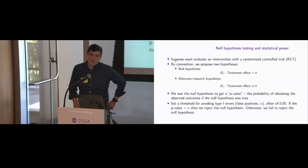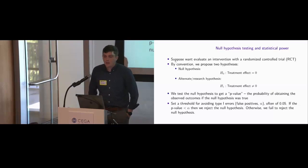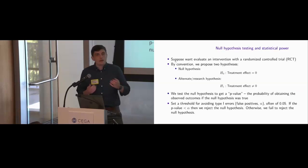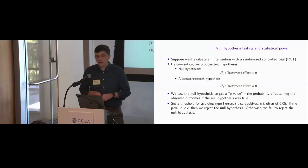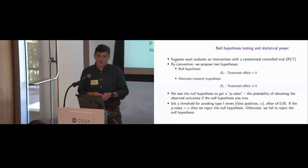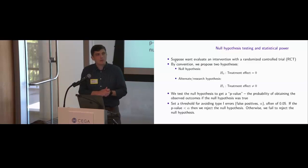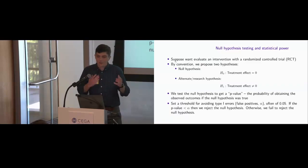In a standard null hypothesis testing framework, say we want to evaluate an intervention with an RCT. By convention, we propose two hypotheses: a null hypothesis of a treatment effect of zero, and an alternate hypothesis that the treatment effect is not zero. By convention, we usually test two-sided hypotheses — whether effects are very positive or very negative — though at times we may be interested in only one-sided tests.